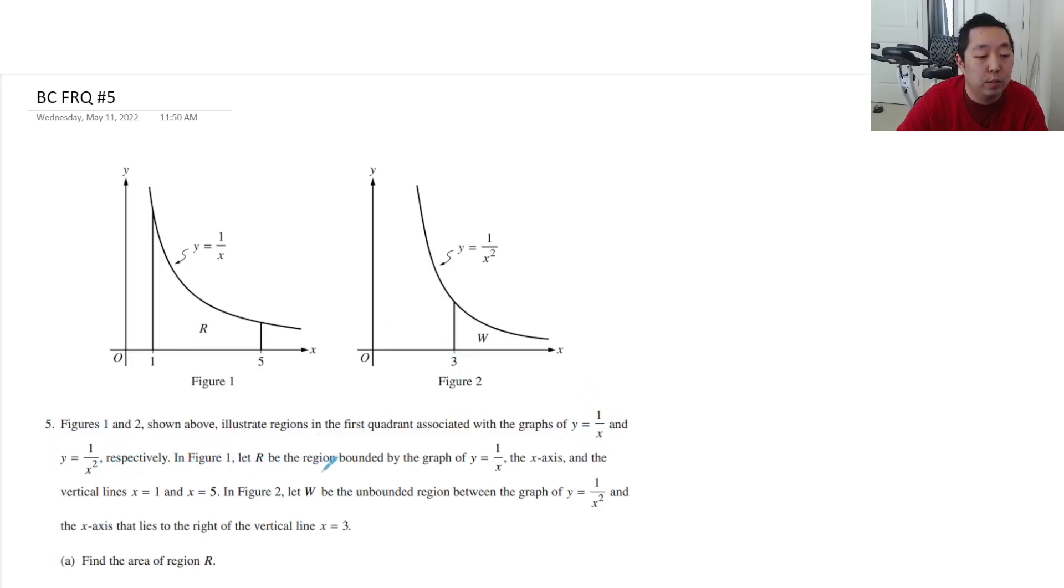In Figure 1, let R be the region bounded by the graph of 1 over x and the vertical lines x=1 and x=5. Figure 2 shows the unbounded region, which lies to the right. Unbounded means it just goes all the way to the right.